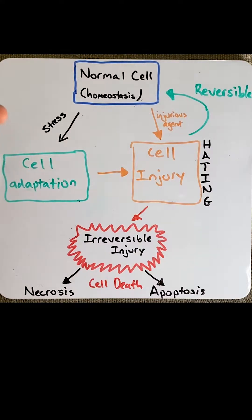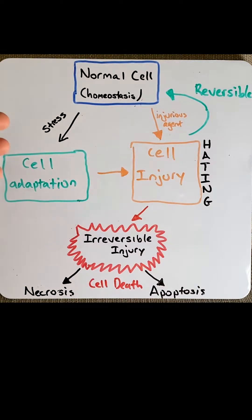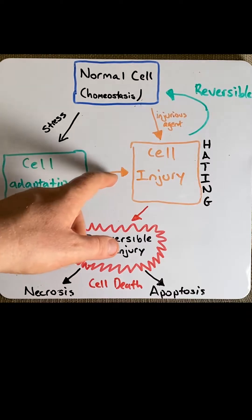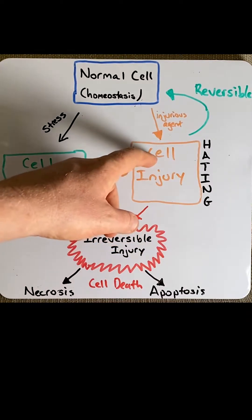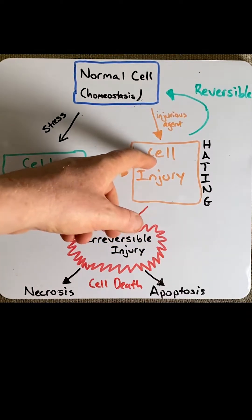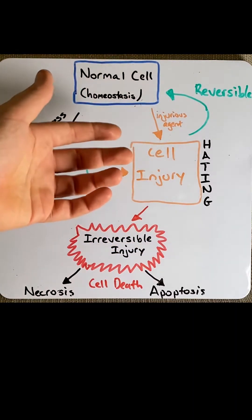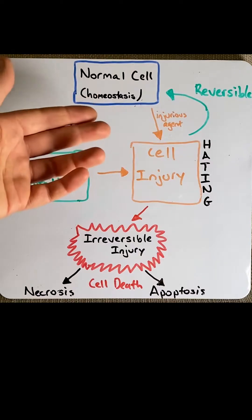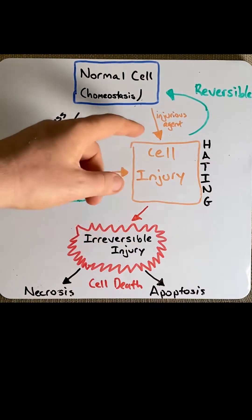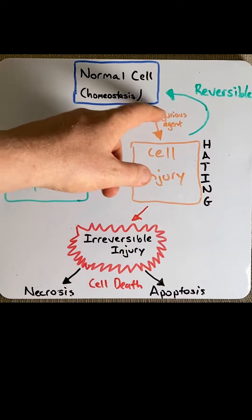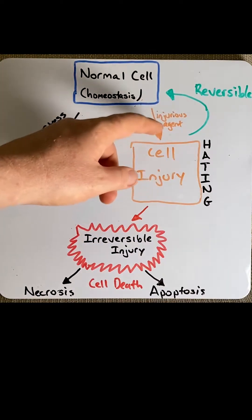Now, if this adaptive ability of the cell isn't sufficient, or the stressor is too strong or produced for too long, this can lead to cell injury. Other more direct ways of cell injury are known as injurious agents.